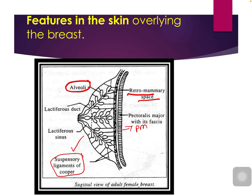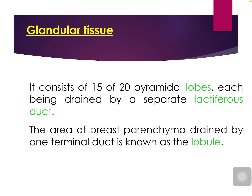The lactiferous duct dilatation beneath the nipple is called the lactiferous sinus. The glandular tissue is separated by fibrous tissue into 15 to 20 pyramidal lobes. The area of breast parenchyma drained by one terminal duct is called a lobule. Each mammary gland has 15 to 20 pyramidal lobes, each consisting of many lobules.